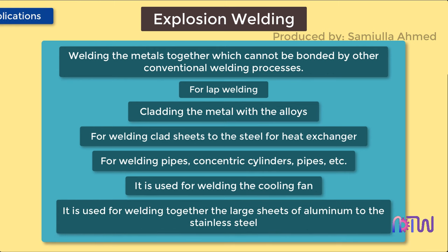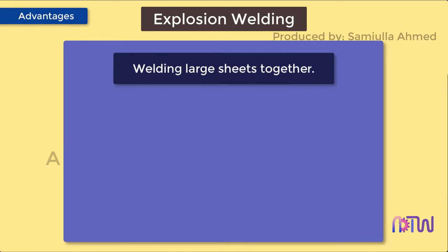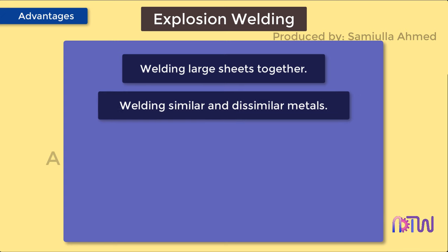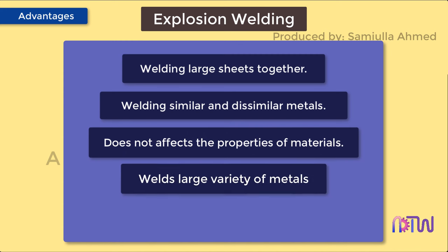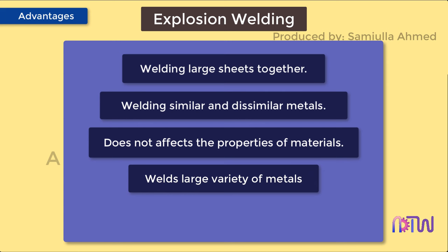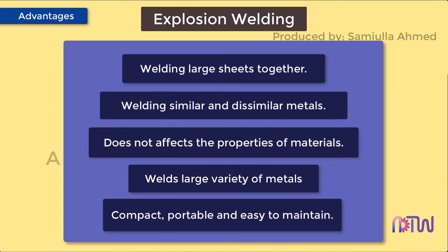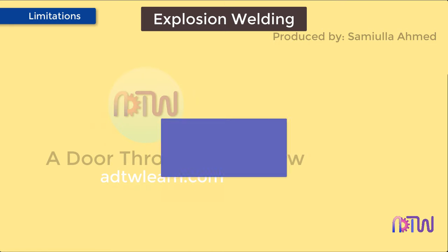Advantages: it makes it possible to weld very large sheets together in an instant. Both similar and dissimilar metals can be welded together. It is a cold welding process and does not affect the properties of the metals. It can weld or bond a large variety of metals that cannot be easily bonded by other conventional methods. This welding process is compact, portable, and easy to maintain.